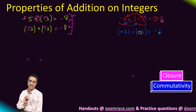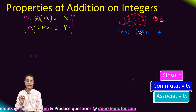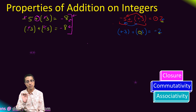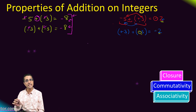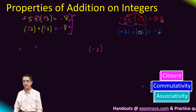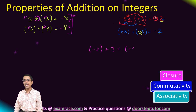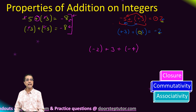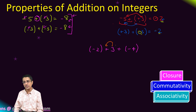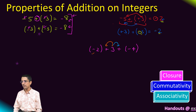This means that addition of integers is commutative. The next very important property is that of associativity. Similar to addition of whole numbers, even in the case of integers, addition is associative. Let's take an example with three integers, associating the middle integer either with the first plus sign or with the second plus sign.